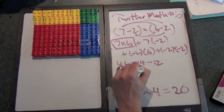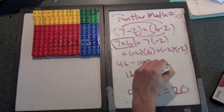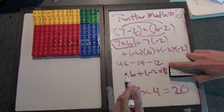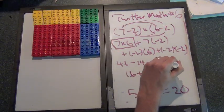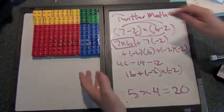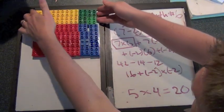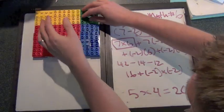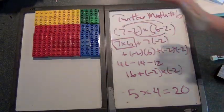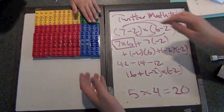So we get sixteen plus minus two times minus two. And you see, you've identified what the problem was. This green square, we've taken away twice. So when you've taken away something twice, and there was only one of them there to begin with, what do we have to do to make this work? We have to add it back in.